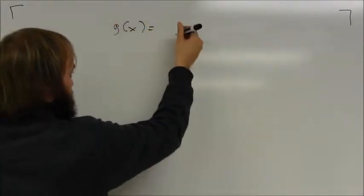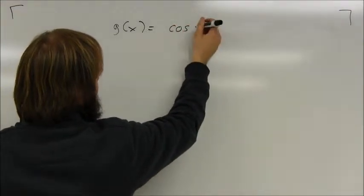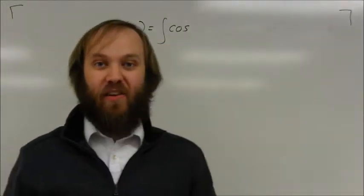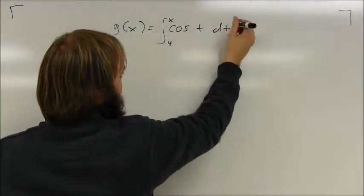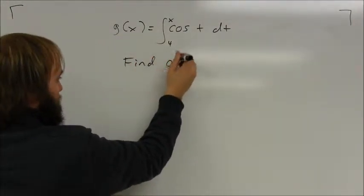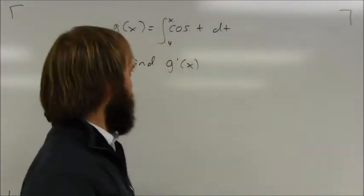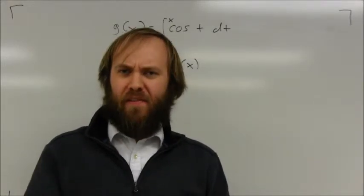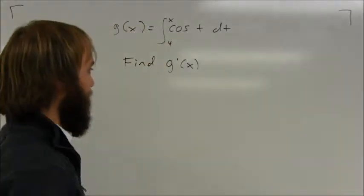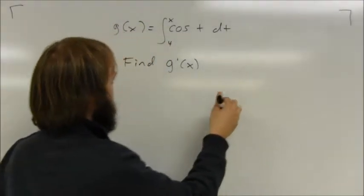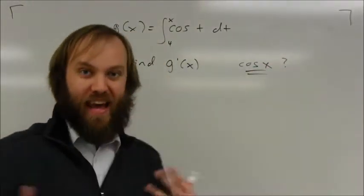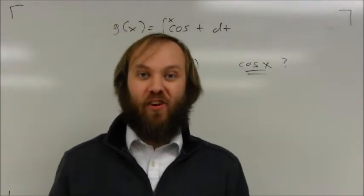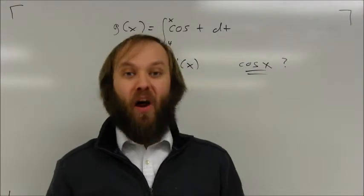This results in some pretty simple relationships. For example, if g(x) equals the integral from 4 to x of cosine(t) dt, and I want to find g prime of x — the original function is an integral, and I want the derivative of an integral. Those two things are opposites, so it seems like they would cancel out, leaving just cosine of x. And it turns out, yes, that is actually the answer. You don't need to show all the steps every time, but you can go through the process if needed.